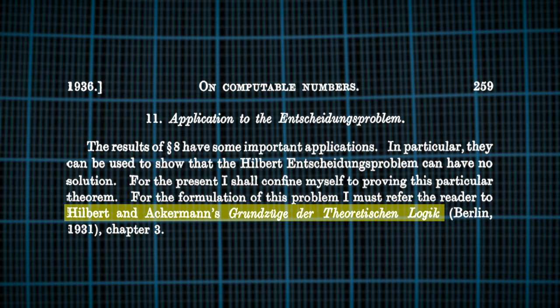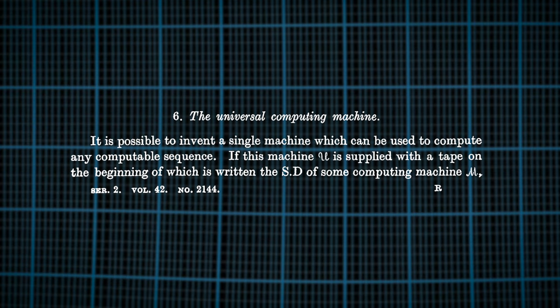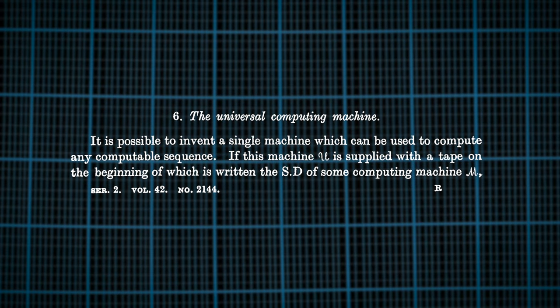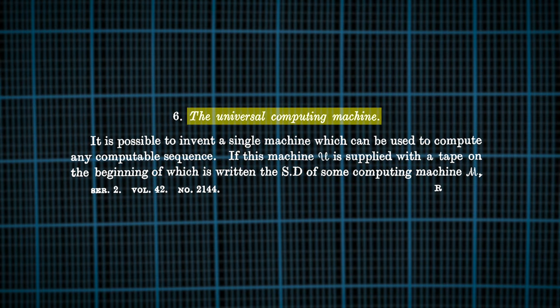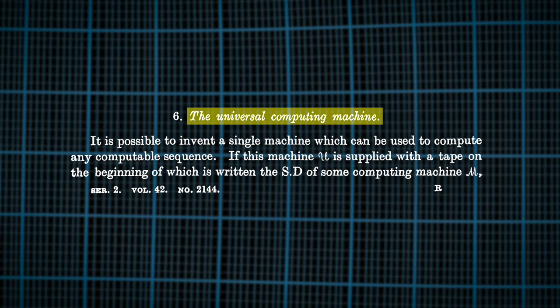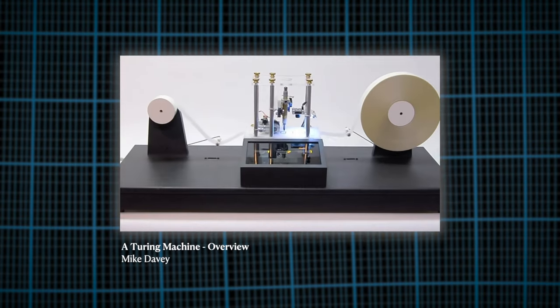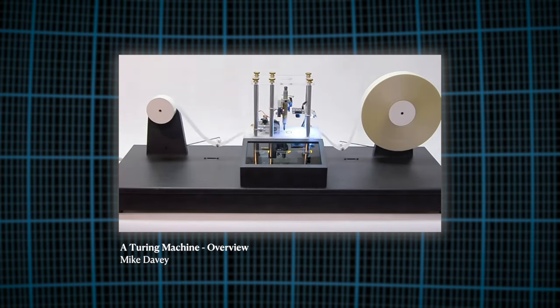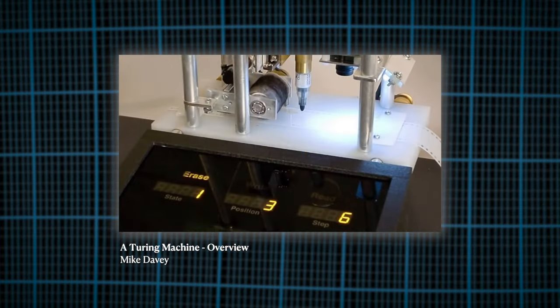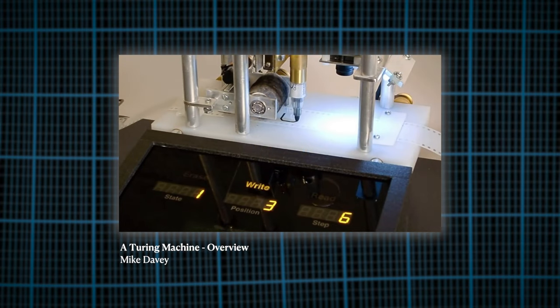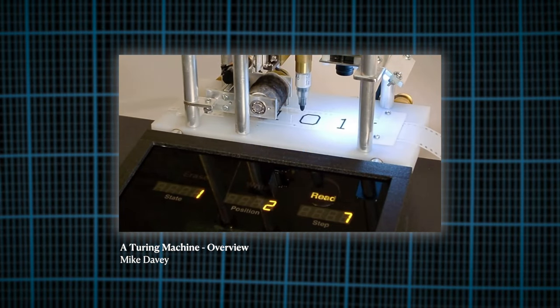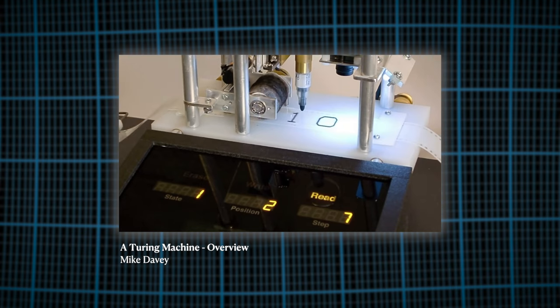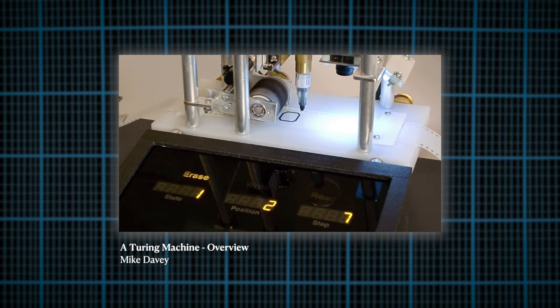Turing was determined to find a solution. He began by formulating a mathematical model of computation, which he called the Universal Machine. This machine, now known as the Turing Machine, was a theoretical machine that could perform any calculation that could be expressed as an algorithm. The idea was that it could read and write symbols on a tape, and move the tape left and right based on a set of rules.